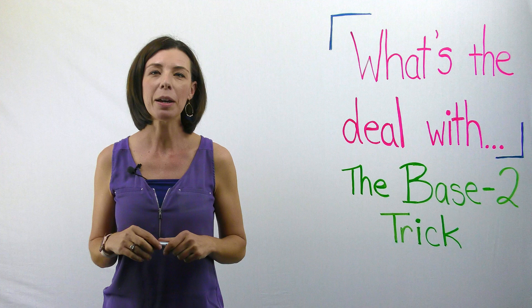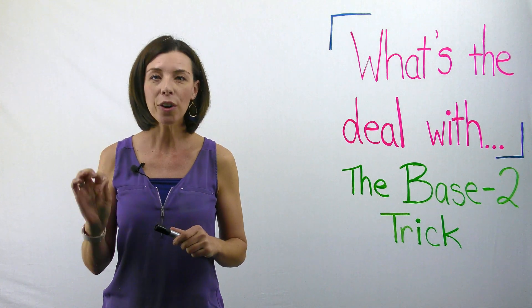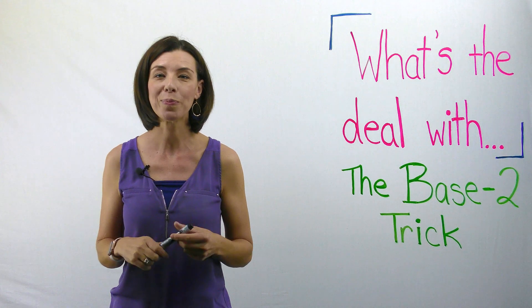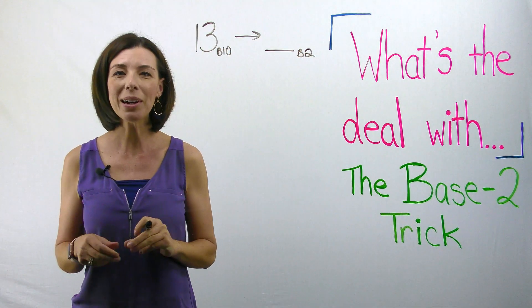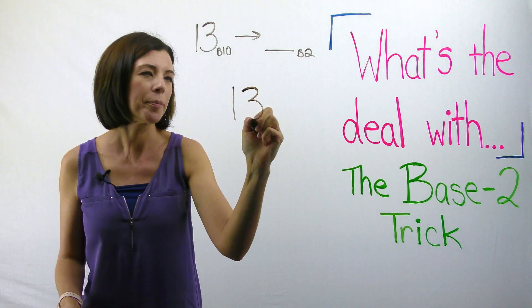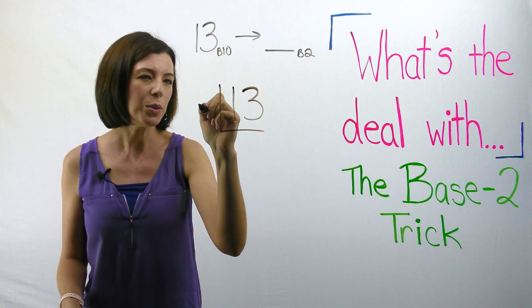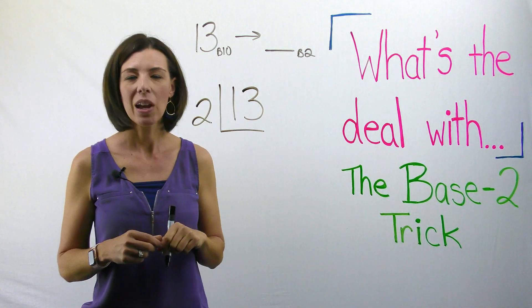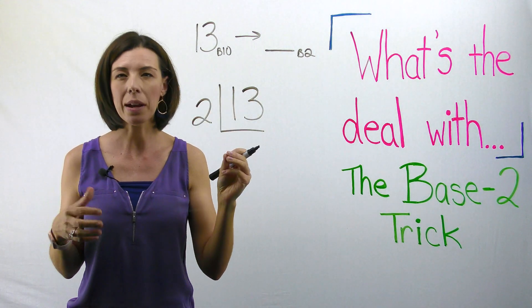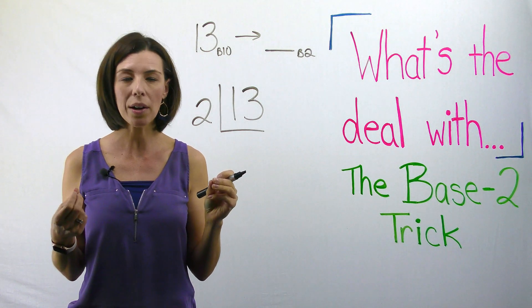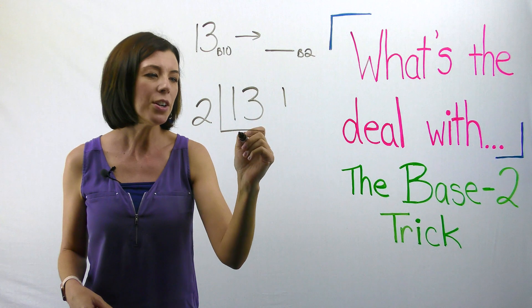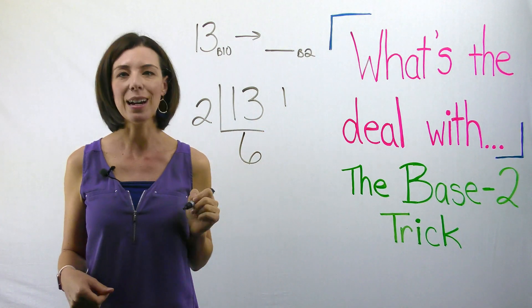So the first thing I want you to think about is if we had 13 base 10 and we're trying to convert it to base 2. Here's what the base two trick says. You take your number and you divide it. So I'm dividing this by two and I see that two goes into 13 six times. So six times two is 12. I'm going to write a remainder of one and I know that it goes in six times.